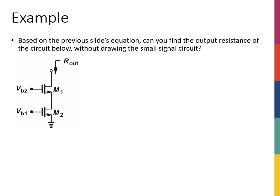Let's look at an example. The question asks: based on the previous slide's equation, can you find the output resistance of the circuit below without drawing the small signal circuit? We know the equation from the previous slide: Rout for a common source stage with degeneration equals RS plus R0 plus Gm·RS·R0. These parameters refer to the transistor closest to the output — so RS1, Gm1, R01.